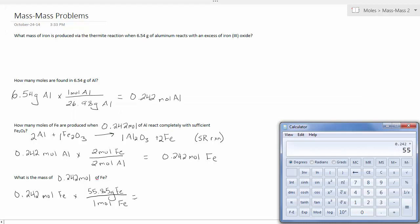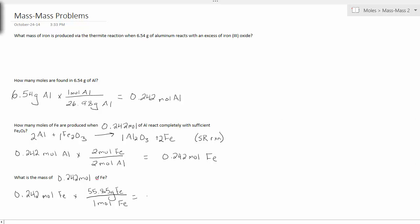All right, so we'll have a look here, 0.242 times 55.85, so 13.5 grams of iron is what we should collect.